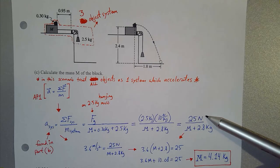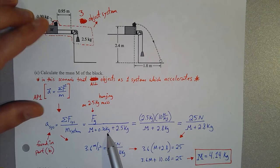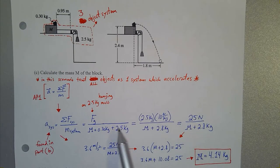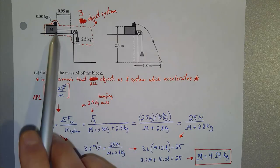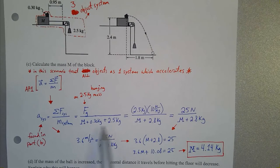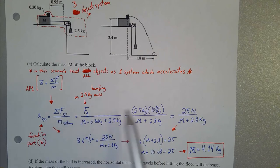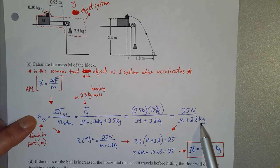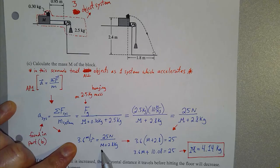We divide the net force by the total system mass, which is the sum of the three individual masses: the block mass M, the ball's 0.3 kilograms, and the hanging 2.5 kilograms. That 25 newtons is accelerating all of that mass — not just the hanging 2.5 kilograms. Combining 0.3 and 2.5 gives 2.8 kilograms, so the right side becomes 25 newtons divided by M plus 2.8 kilograms.